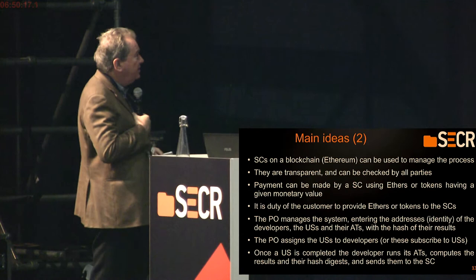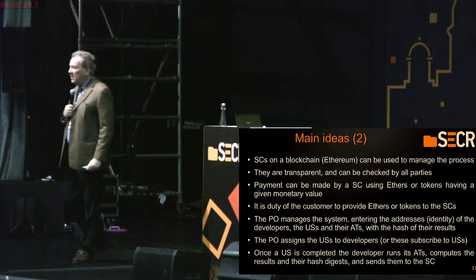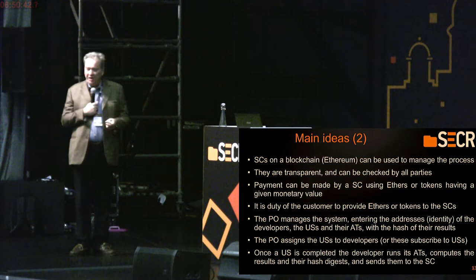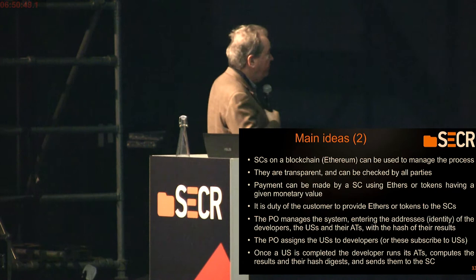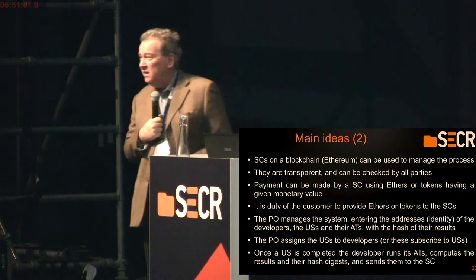Clearly, the customer will provide to these contracts the Ethers — the money to pay — and also a very small amount of money to the team and to the product owner to run the system, because to run a smart contract you need a small amount of money, on the order of maybe half a dollar today. The product owner manages the system, and basically, once enabled, can add to the system the stories and the results of the tests.